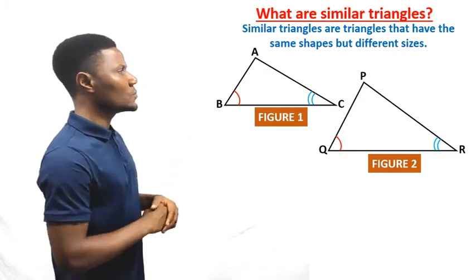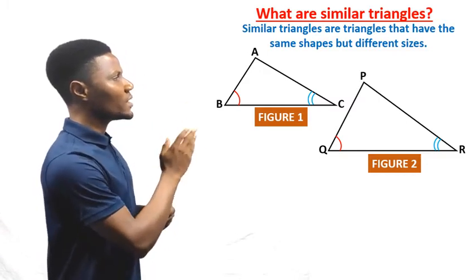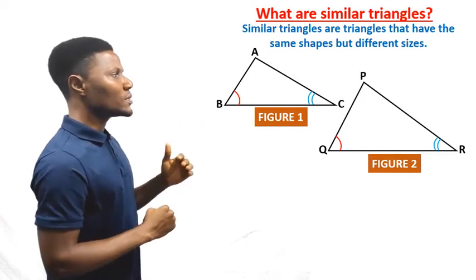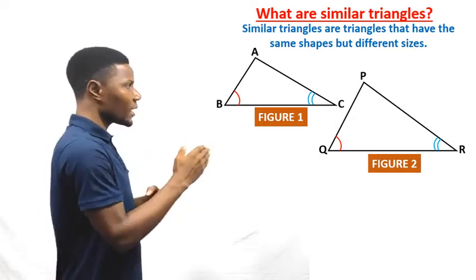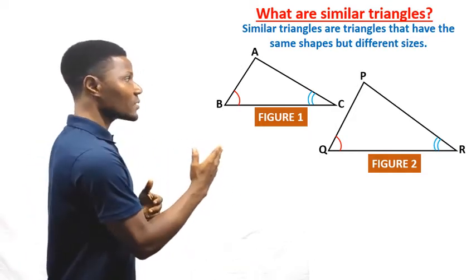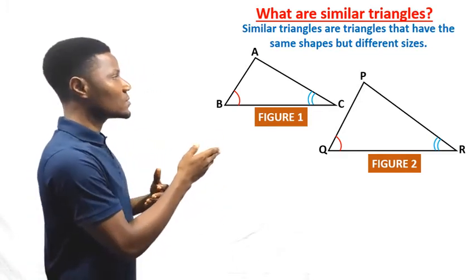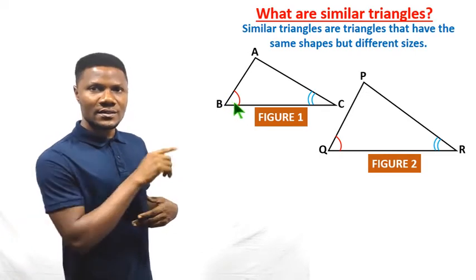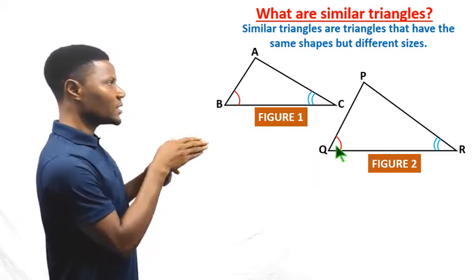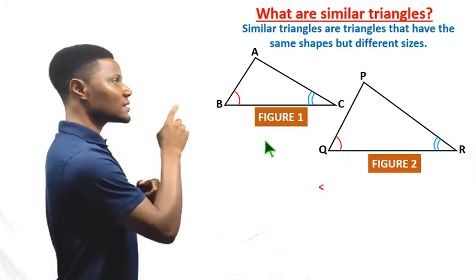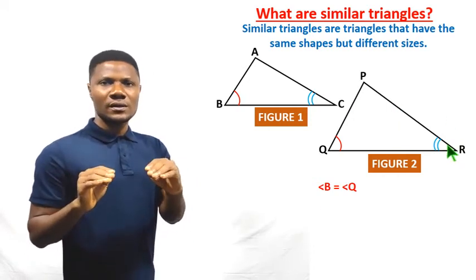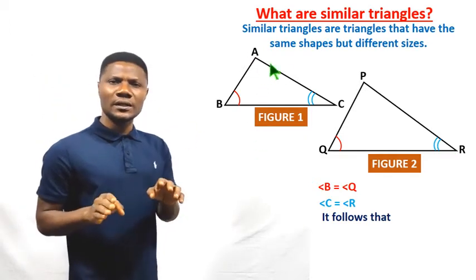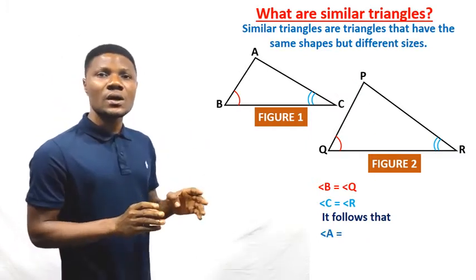We have figure one and figure two. Figure one is triangle ABC and figure two is triangle PQR. You will discover that the shape of figure one is smaller compared to that of figure two. But these two triangles are similar. If you look at the angles, you will discover that angle B is equal to angle Q, angle C is equal to angle R, and it follows that angle A is equal to angle P.